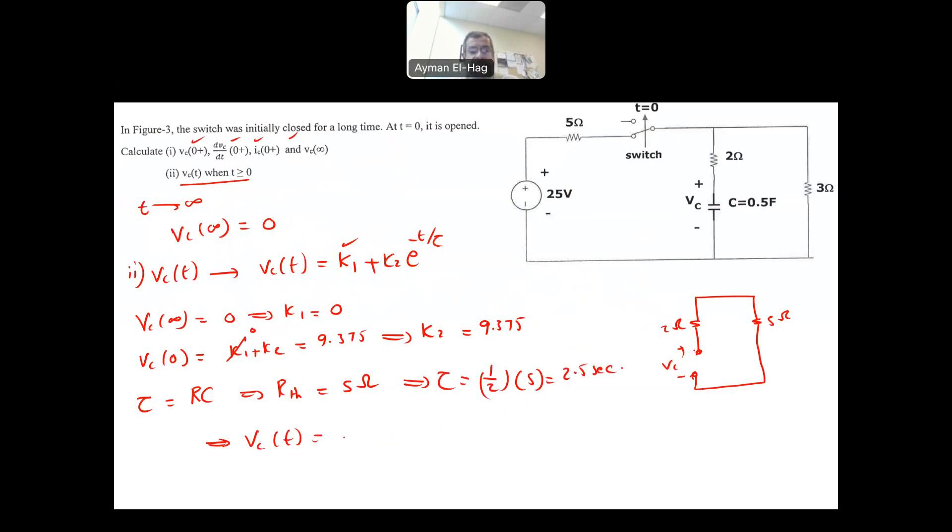Then now I can find my VC of T is equal to K1, which is zero, 9.375 E to the power of minus T over tau, which is 2.5 volt. So here at T equal to zero, the voltage is 9.375, which satisfies this condition. As T goes to infinity, this will diminish and go to zero. If I want to draw this, you start, this is your VC of T. You start at 9.375 and then you will have a decaying function like this one.